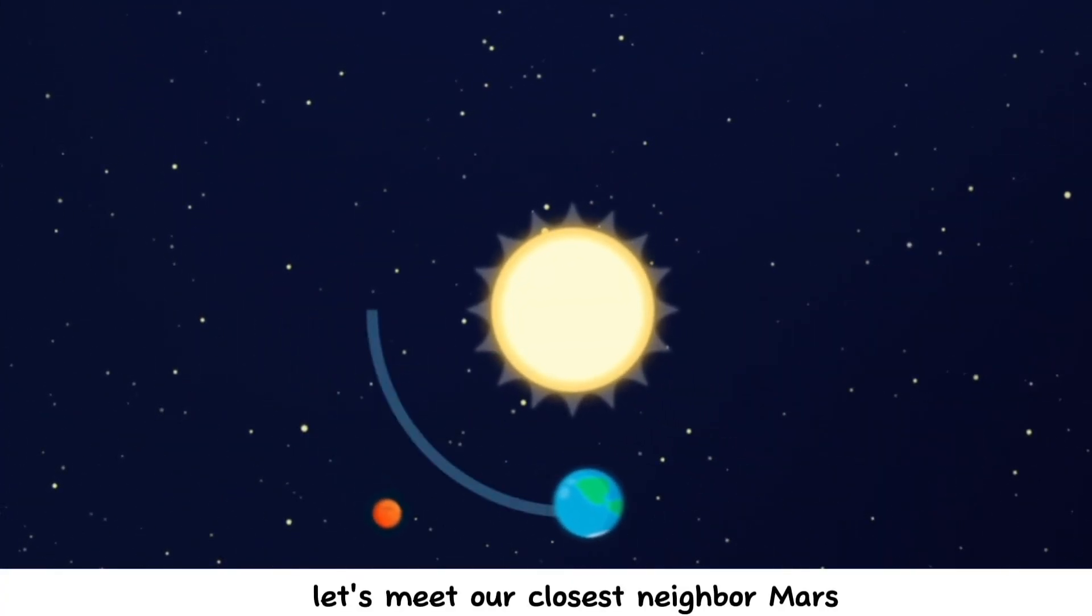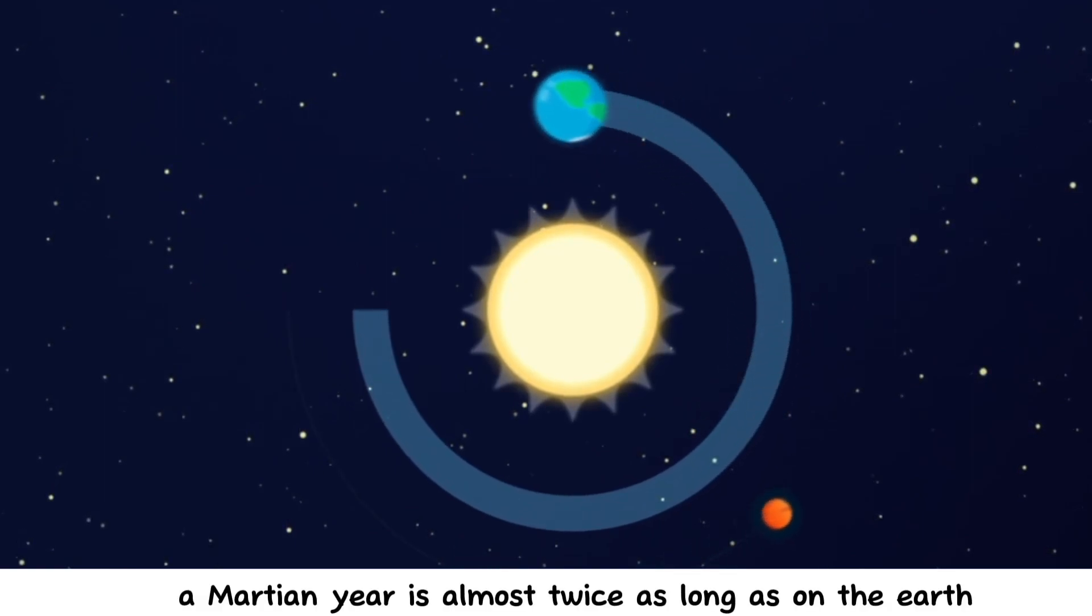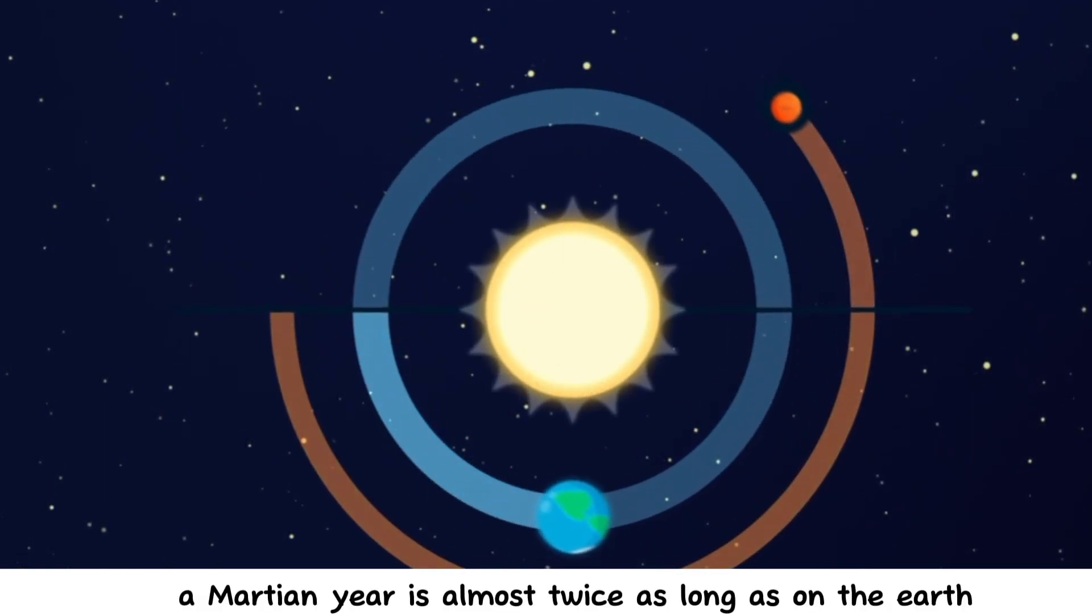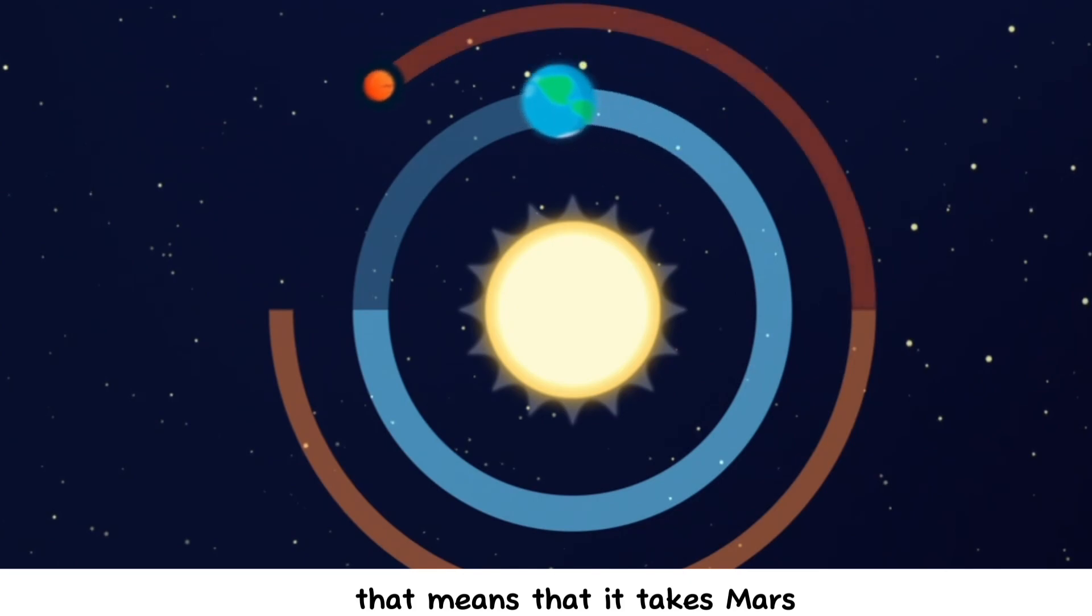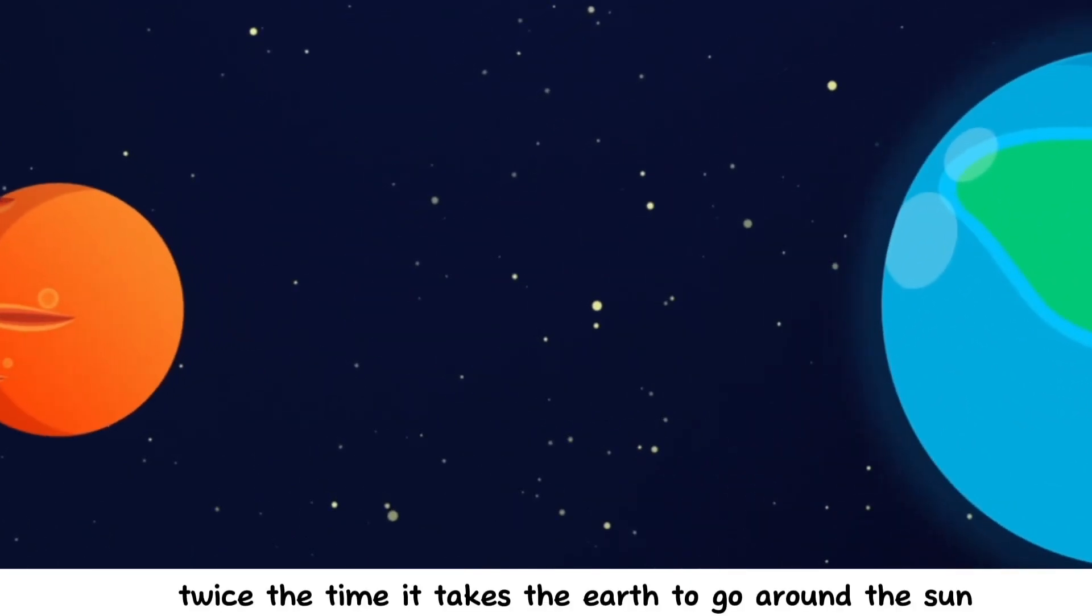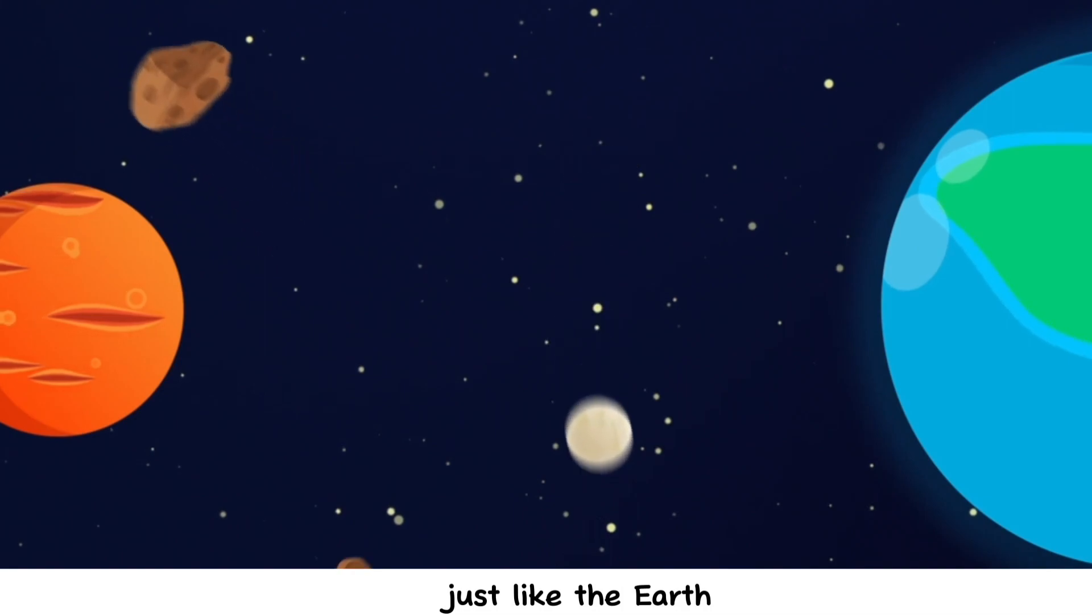Let's meet our closest neighbor, Mars. A Martian year is almost twice as long as on the Earth. That means that it takes Mars twice the time it takes the Earth to go around the sun.